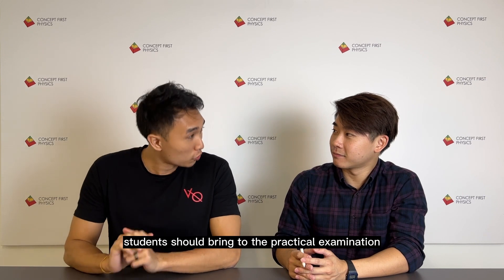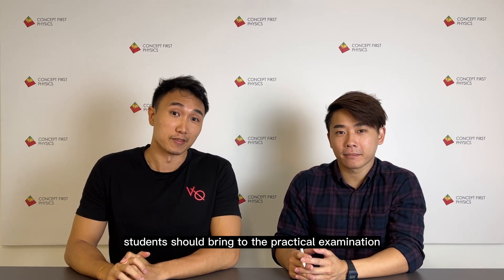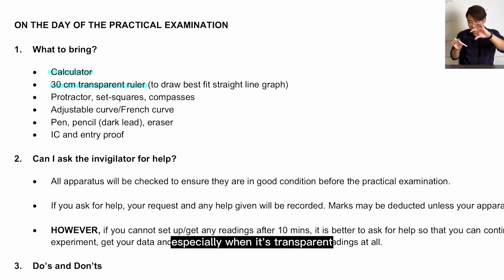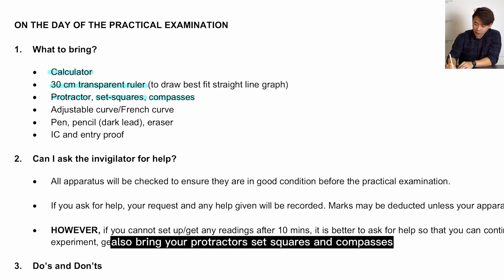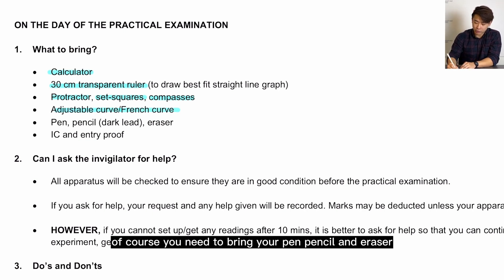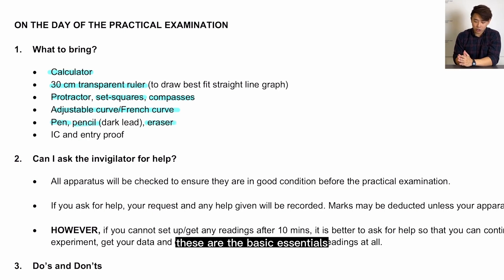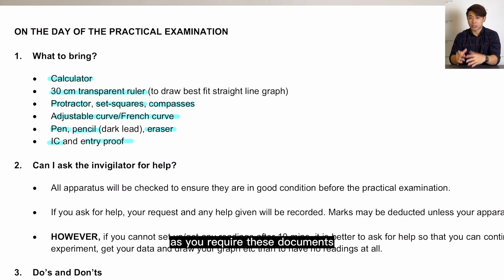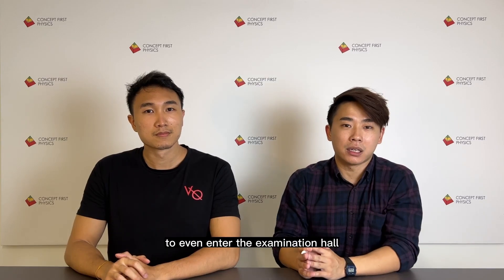So Mr. Siang, what do you think students should bring to the practical examination? Okay, first of all you look at your calculator because there are surely a lot of calculations. Bring also a 30cm transparent ruler, it is good for drawing your best fit line, especially when it's transparent because you can see the data points easily. Also bring your protractor, set squares, and compasses. Sometimes you are required to draw a best fit curve, in that case you need an adjustable curve or French curve. Of course, you need to bring your pen, pencil, and eraser. These are the basic essentials. Finally, remember to bring your IC and entry proof as you require these documents to even enter the examination hall.